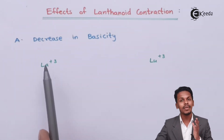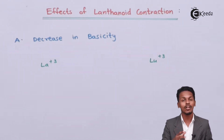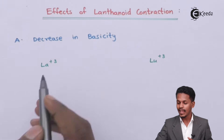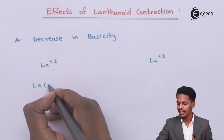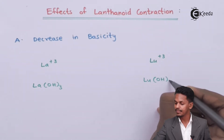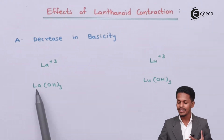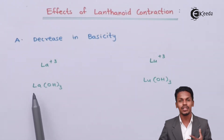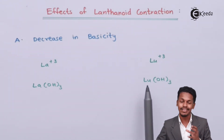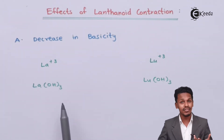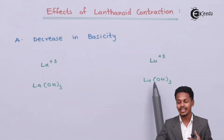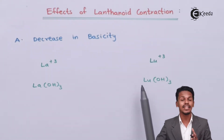Since we are moving from left to right, that is from lanthanum to lutetium, the atomic size and ionic size go on decreasing. Because of that, La³⁺ forms lanthanum hydroxide, and lutetium forms lutetium hydroxide. The La³⁺ ion has a larger atomic size compared to lutetium, which has a smaller atomic size. So the bond between lanthanum and hydroxide is ionic in nature, while the bond between lutetium and hydroxide is covalent in nature.